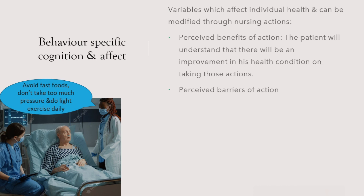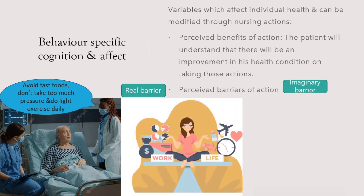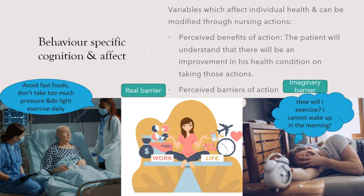Next is perceived barriers of action — what are the barriers to preventive steps? They may be real or imaginary mental blocks. For example, a working mother with a very busy schedule may not have enough time to exercise — that is a real barrier. But someone who avoids exercise because he cannot wake up early is experiencing a mental block, because exercise can be done at any chosen time of the day as long as its regularity is maintained.